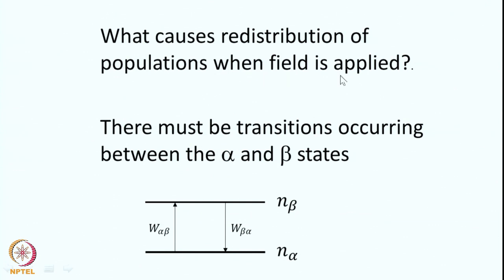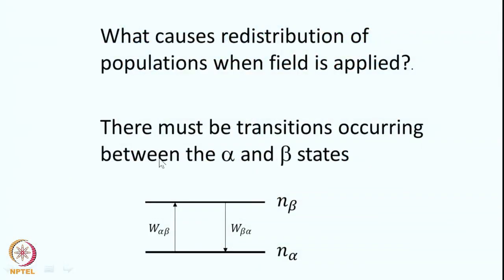Returning to the question of what causes redistribution of populations when a field is applied: the RF interacts with the spin magnetic moment and causes transitions. These transitions redistribute populations between the alpha and beta states. The number of spins in the alpha state is N-alpha, in the beta state is N-beta, with transition probability W-alpha-beta for transitions from alpha to beta, and W-beta-alpha for the reverse.